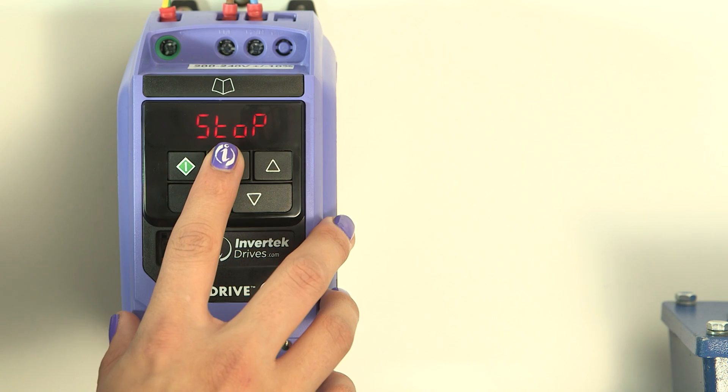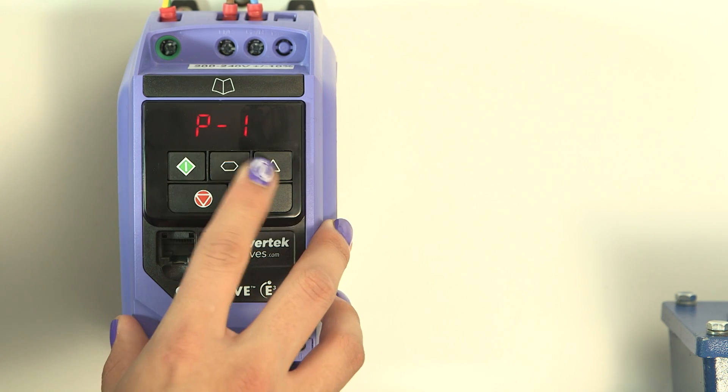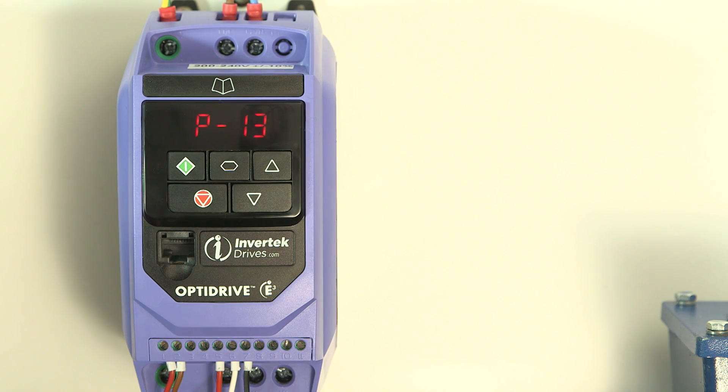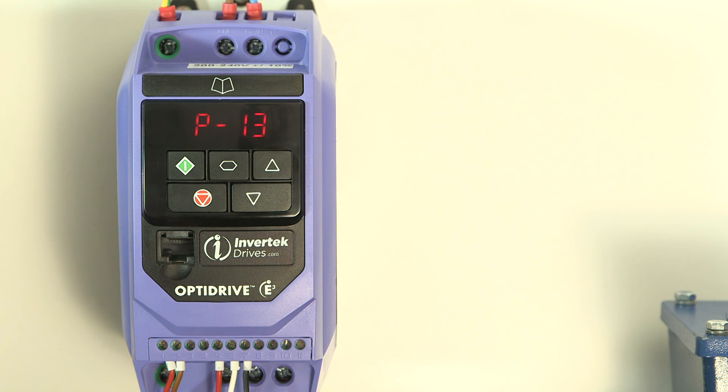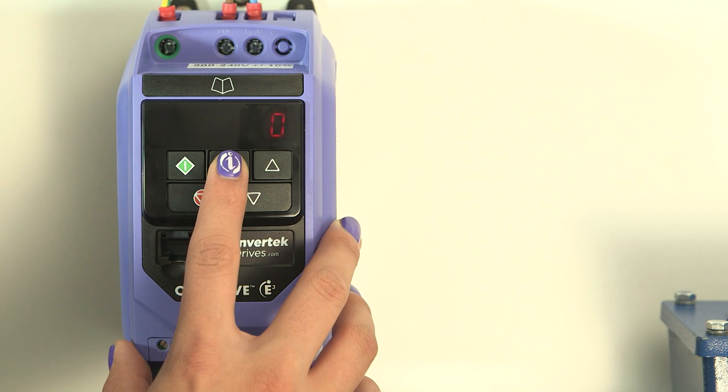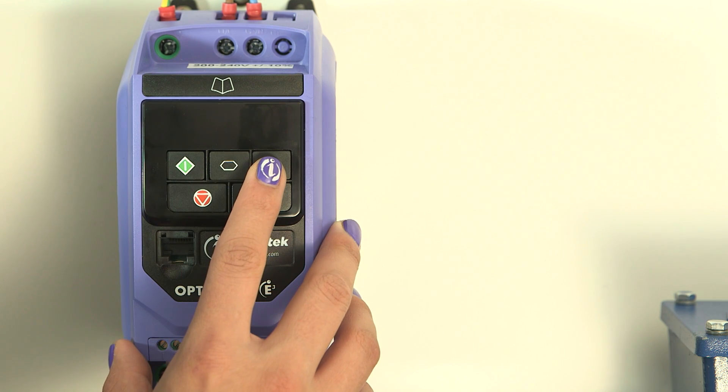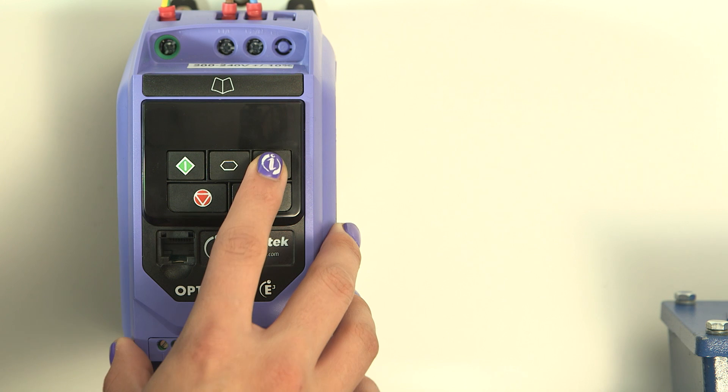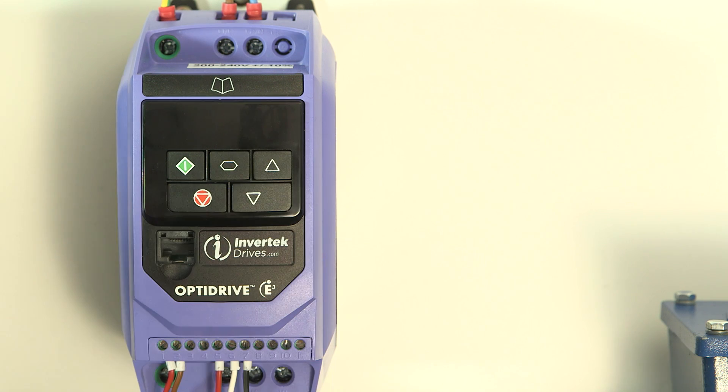The last parameter in these standard parameters is P13, which selects the operating mode. The default setting of 0 is industrial mode. Setting 1 is pump mode. Setting 2 is fan mode. More information about these modes can be found in the user manual.